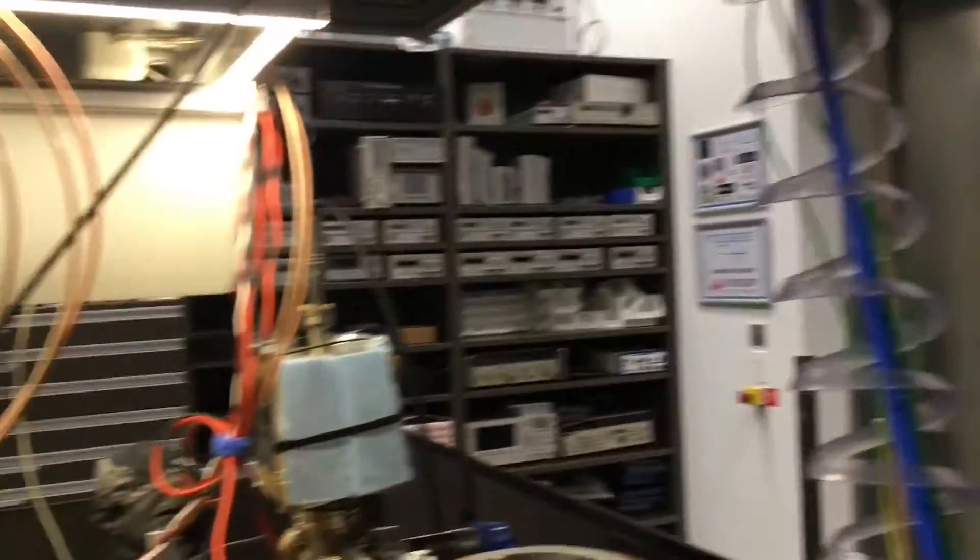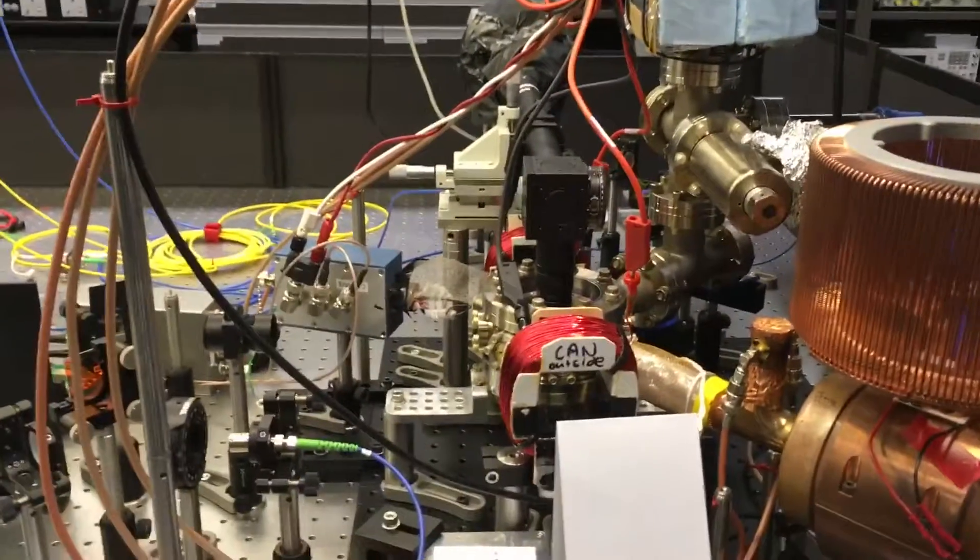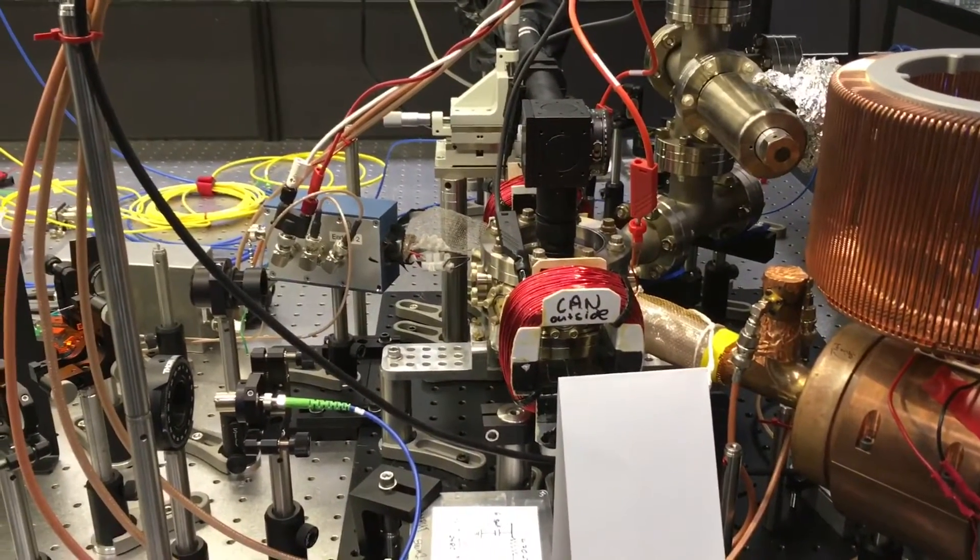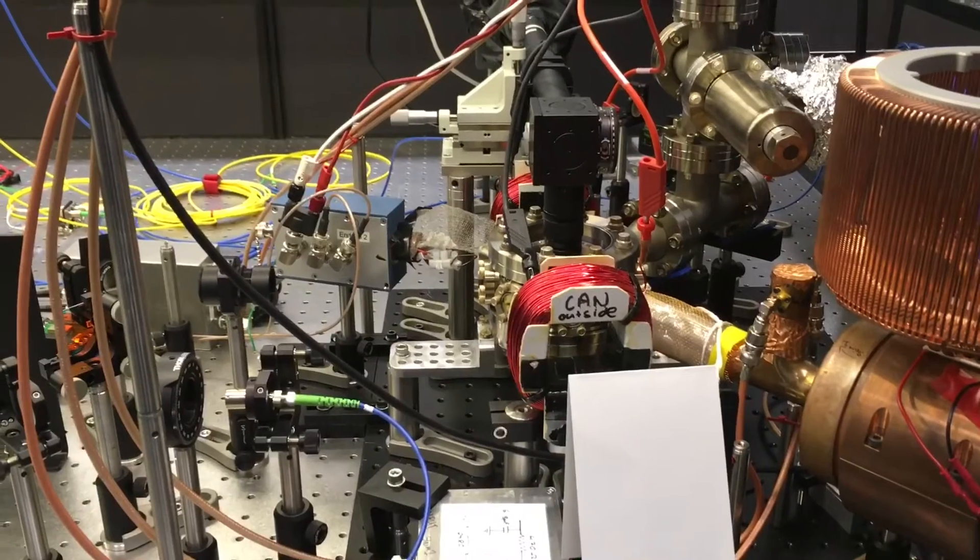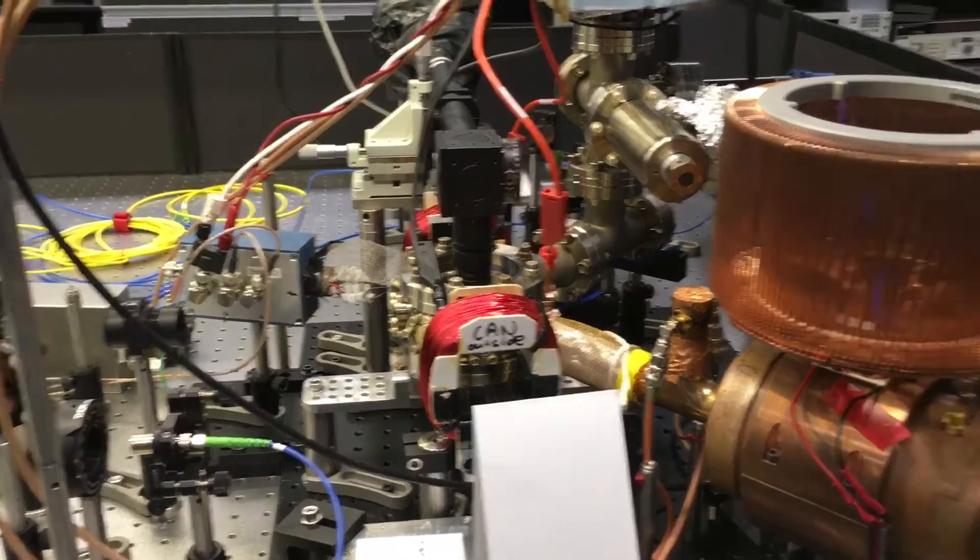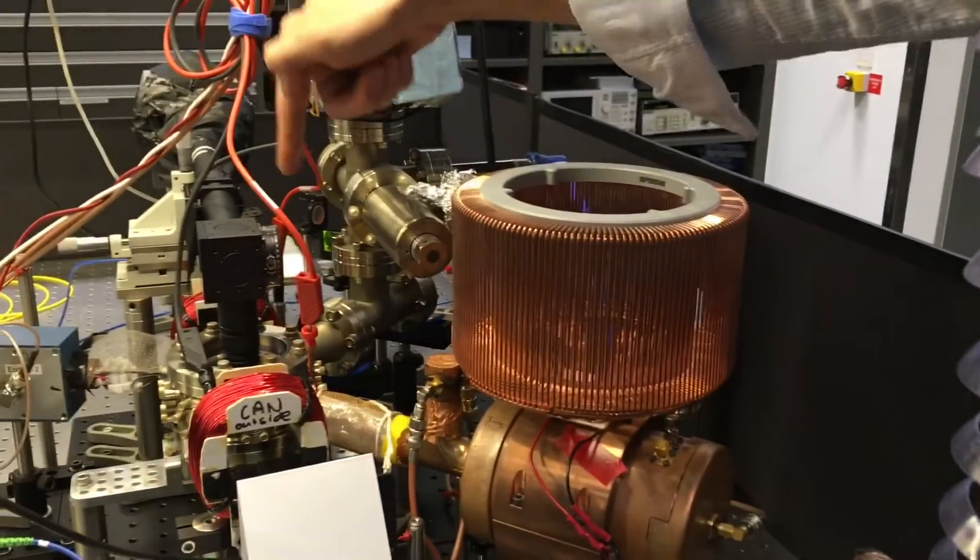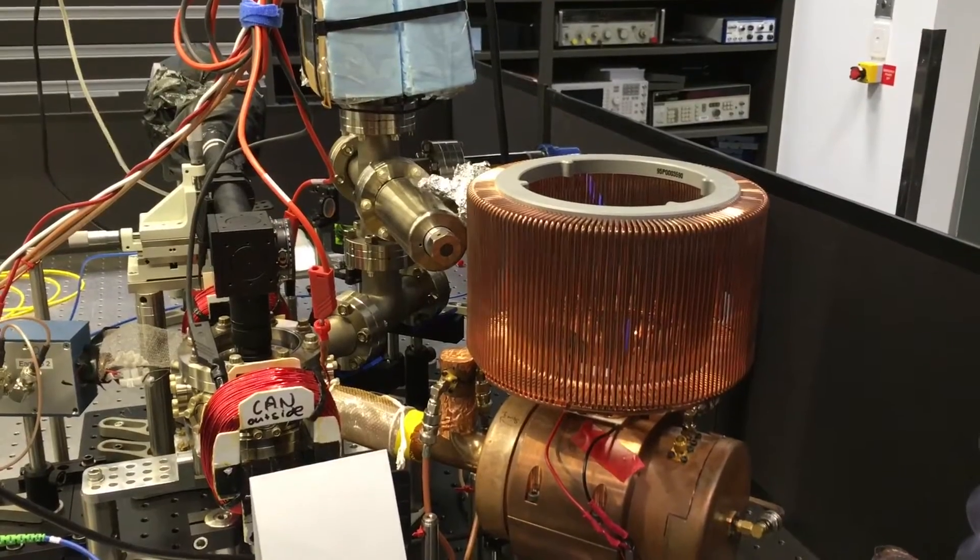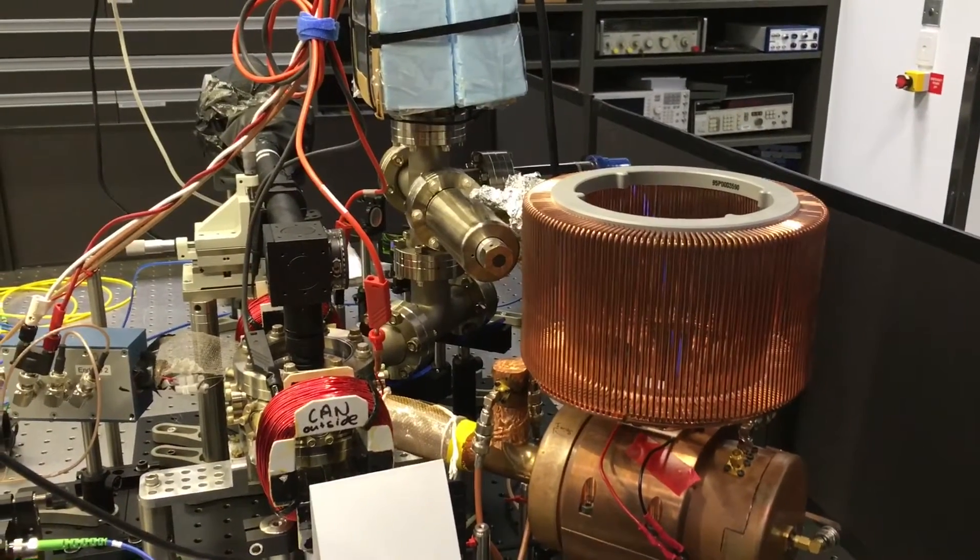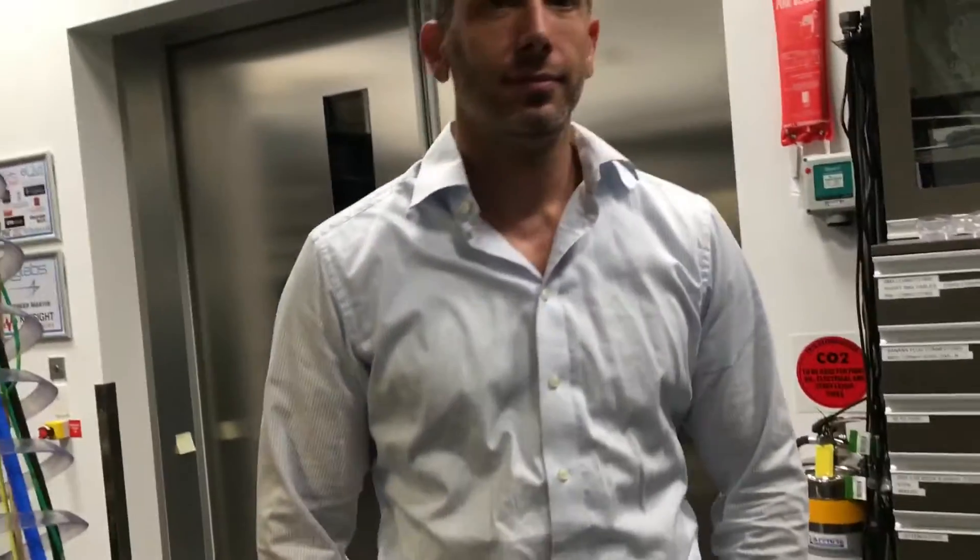This is one of our tools, it's called an ion trap. So all those lasers that you saw feed into this system. The lasers enter and cross right in the middle, right underneath this black tube. And inside of that we can trap one atom.